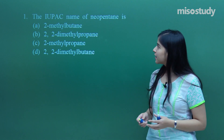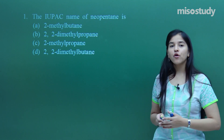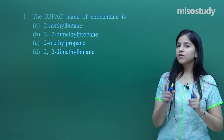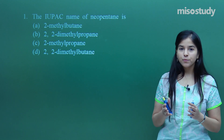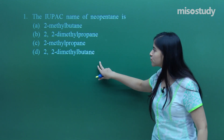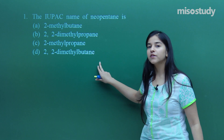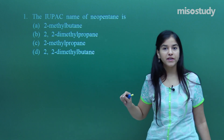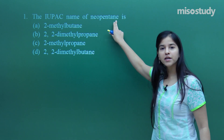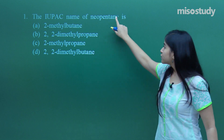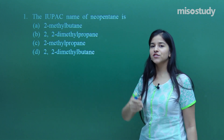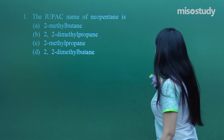What does question one say? The IUPAC name of Neopentane. First of all you need to know what Neopentane is and find out its IUPAC name. Neopentane is just a common name. So let us just draw the structure.